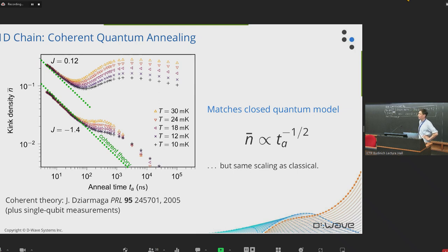So just to give a quick recap of the 1D results, what we did was we annealed very, very fast, and when you anneal very, very fast, you remain coherent, and that means that the thermal environment doesn't affect you. So there's a collapse with respect to changing temperature in the environment, and what we see gives a very good quantitative agreement with the closed system quantum model.